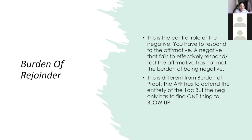This is different than the burden of proof, where the AF has to defend the entirety of the 1AC — all eight minutes of what happened. The affirmative just can't say 'JK, we don't want to go over the AF anymore.' The difference for the negative is that you only have to find one thing about the affirmative that is bad, doesn't solve, doesn't work, and blow that up. That one thing can be the reason the affirmative doesn't win. It's like a puzzle — finding that one piece and taking it out.